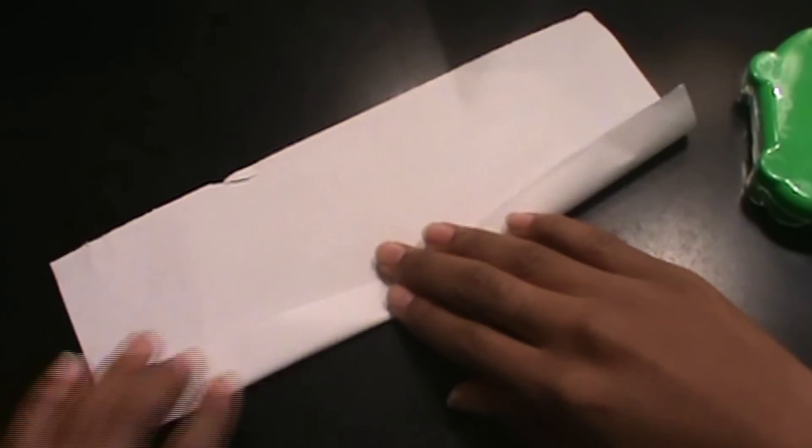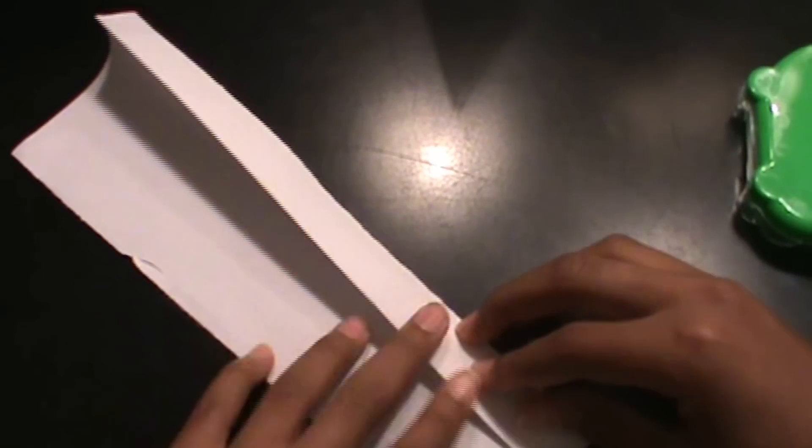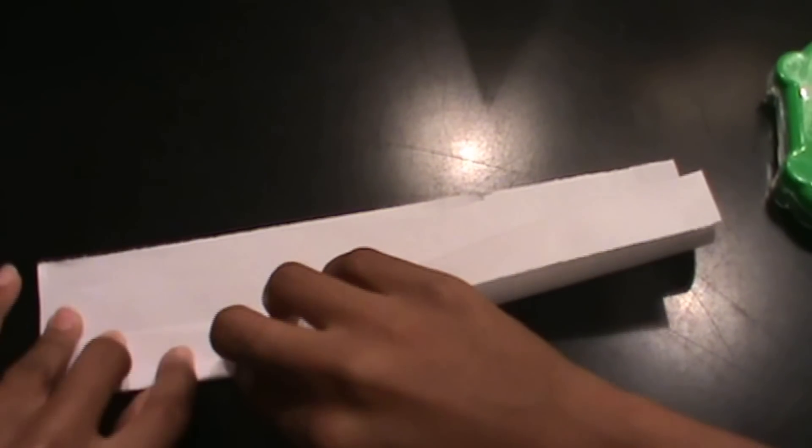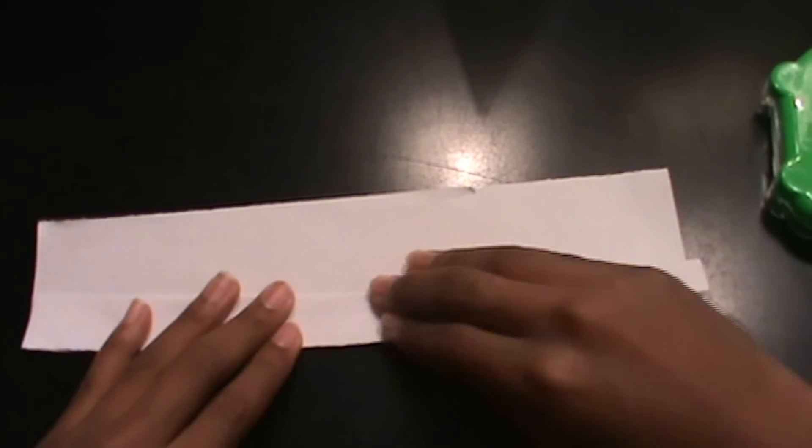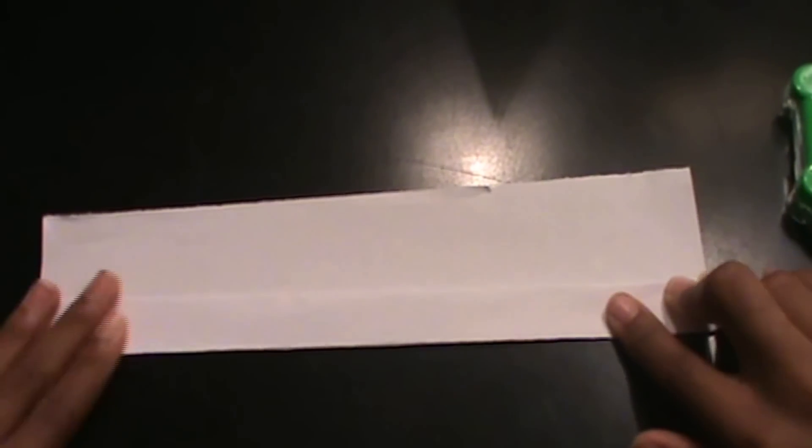So about two centimeters, doesn't have to be exact, just hold it like so. Then flip it over, fold another one, another strip, the same exact size. And just do this until you think you have enough for 19 triangles to fit on each one. I'll show you that later. If you're not sure, just watch the whole tutorial first, and it'll make sense too.